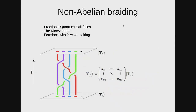This is another example being explored very intensively in different communities. People are trying to implement this in topological superconductors, looking for the Kitaev chain or Kitaev lattices — systems with p-wave pairing.